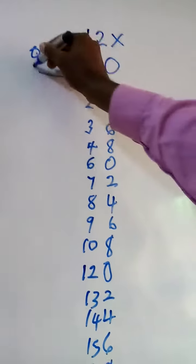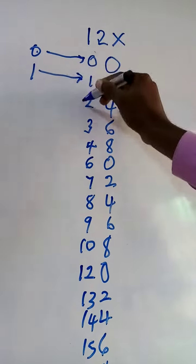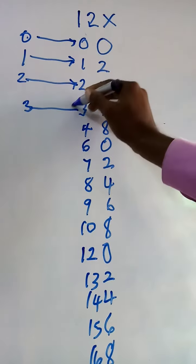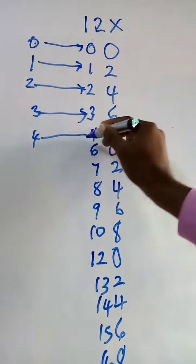Zero. One, twelve. Twelve times two, twenty-four. Twelve times three, thirty-six. Twelve times four, forty-eight.